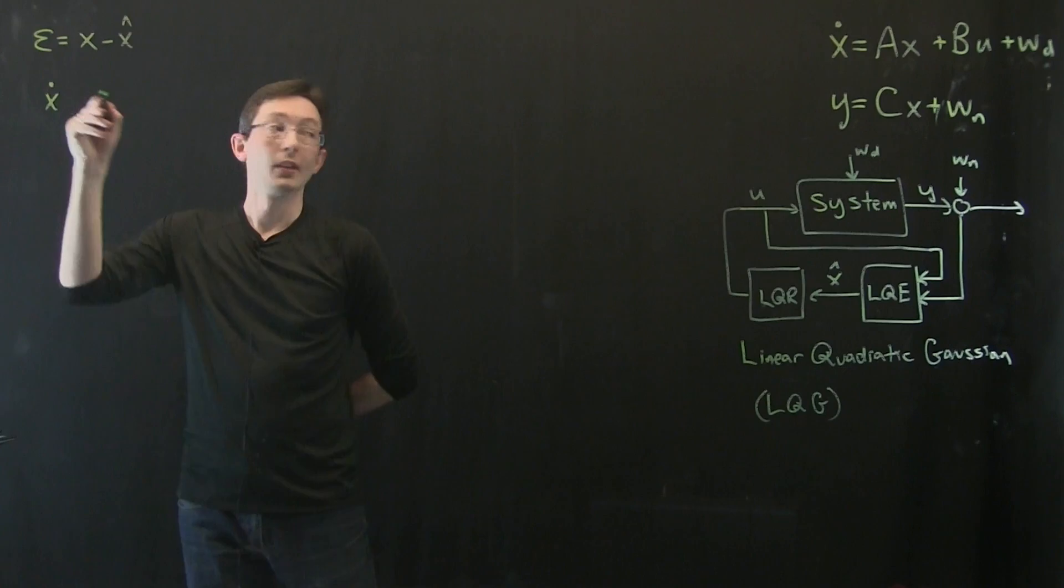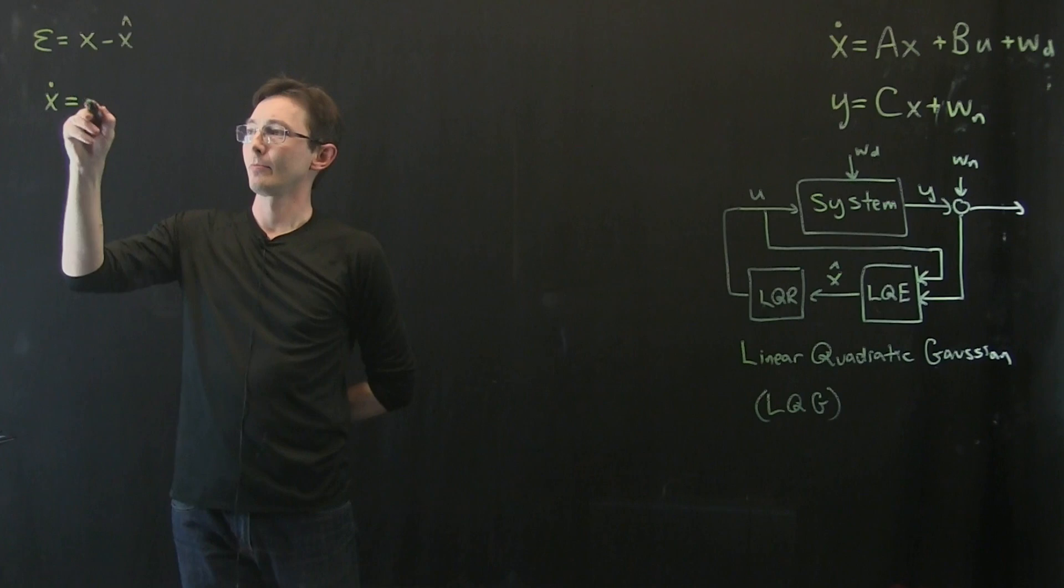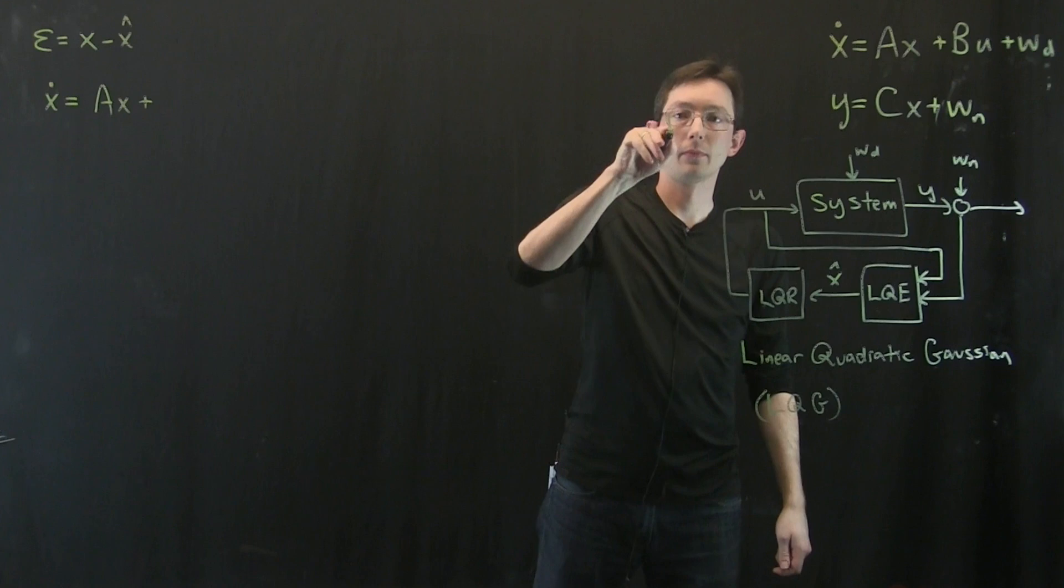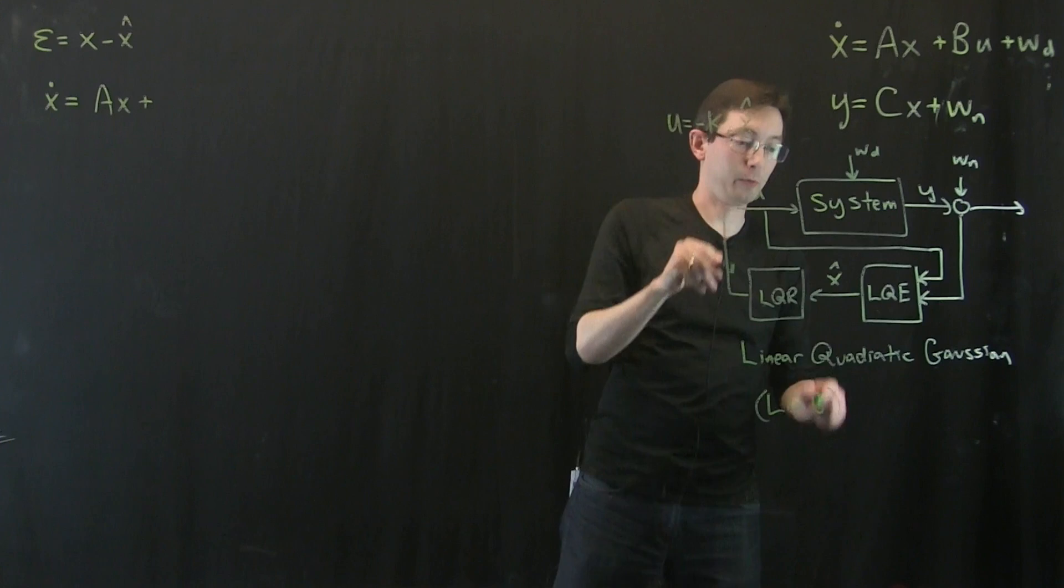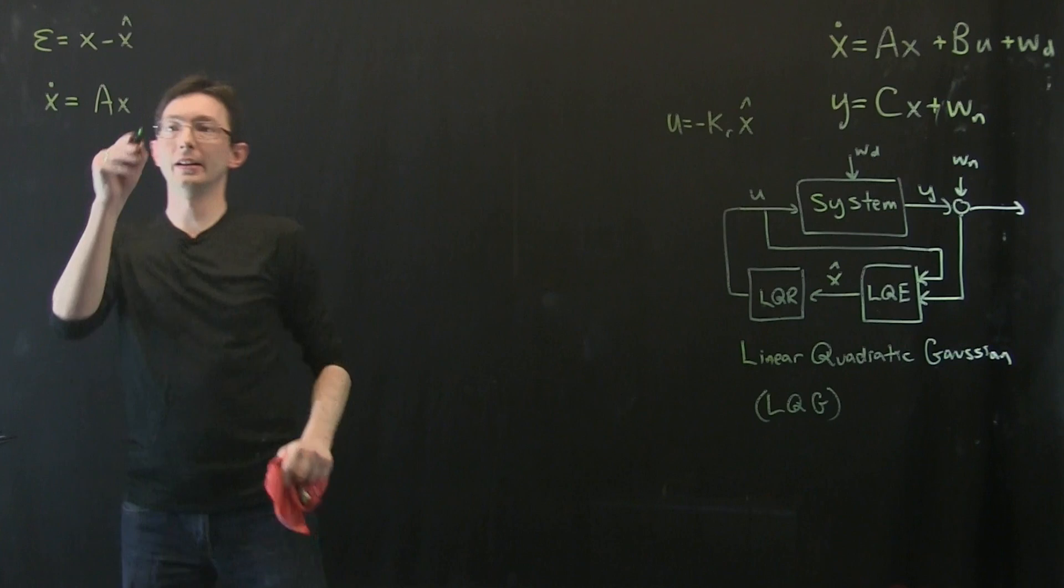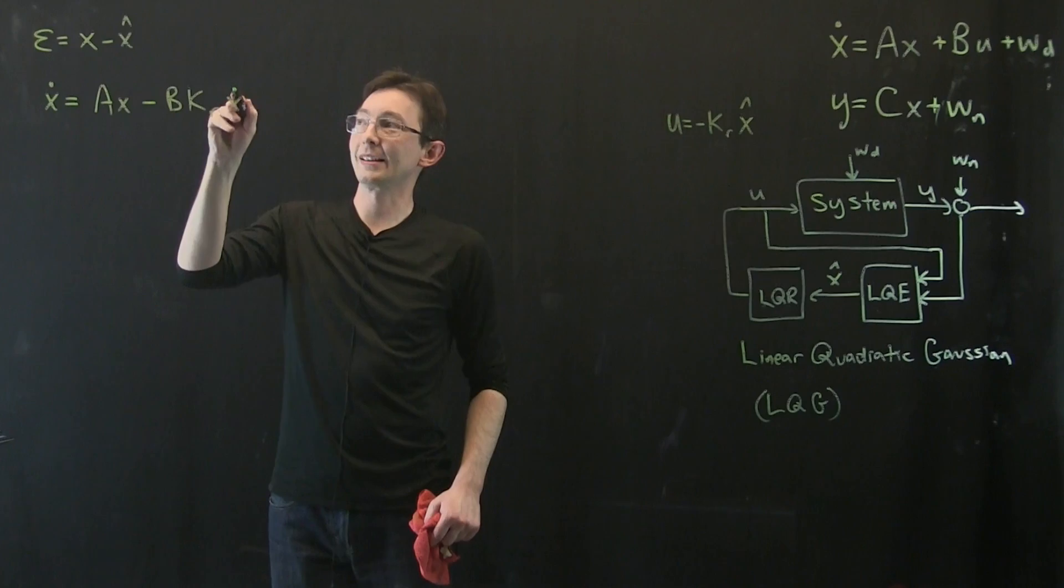Okay, it's equal to ax plus bu, but remember u is minus k, so u equals minus kr x-hat. We're using the estimate of x because we don't have access to the full states times our LQR gain matrix. So this is really a minus b kr x-hat, plus some disturbances.